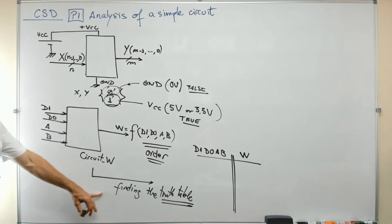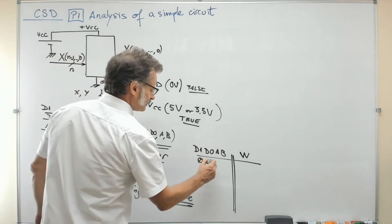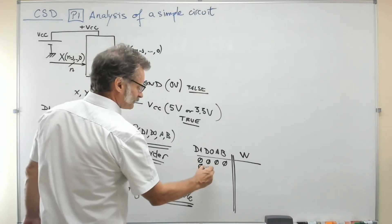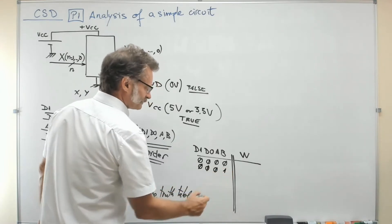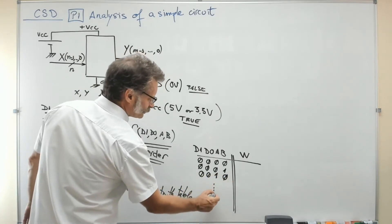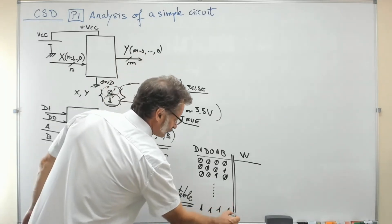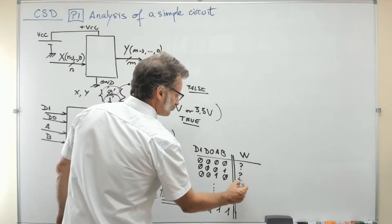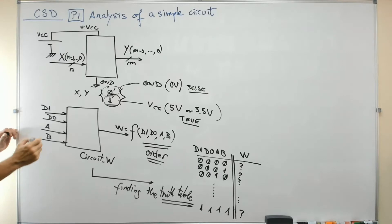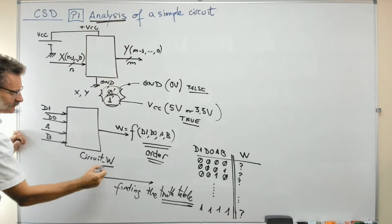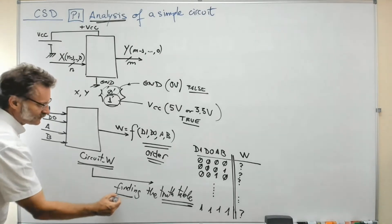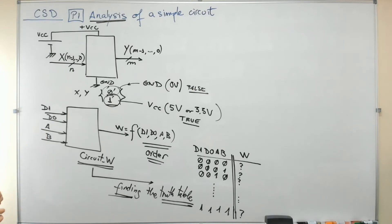The truth table is basically a device that shows you every single combination — for example, first where every input is zero, then where every input is zero except b which is one, and so on down to the final row where everything is one. Determining the output value at every combination is the aim of the analysis. So when we talk about analyzing a circuit, we talk about finding its truth table for a given circuit organized around some gates.